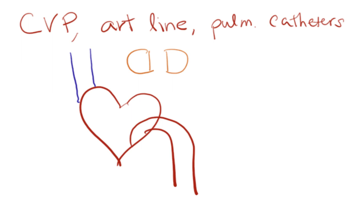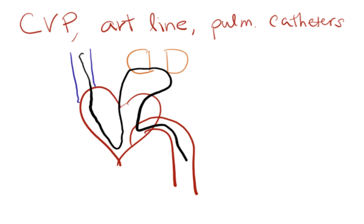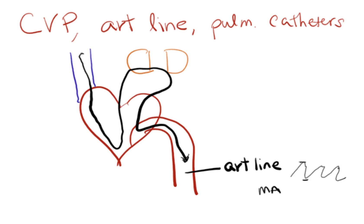Here we have normal blood flow through the heart. Blood comes in through the vena cava, through the right atria, right ventricle, out to the lungs, to the left atria, left ventricle, and then out the aorta. Here in the aorta we get our art line, and that gives you a waveform in addition to a systolic and diastolic value and a MAP. Here in the superior vena cava we get our CVP reading, which can tell you your fluid status.